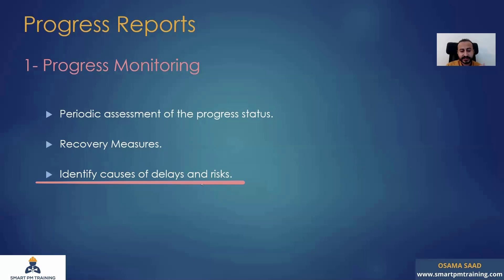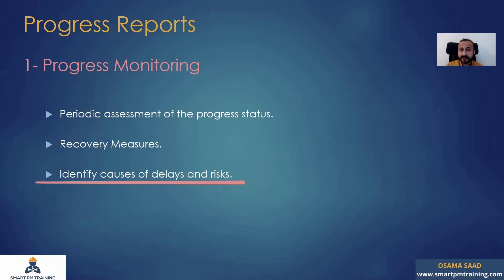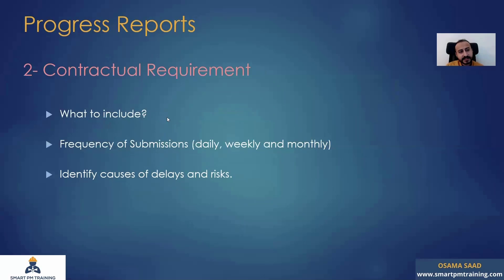Identify causes of delay and risk. You may know that the overall project is in delay by one month, but what is causing the delay? Maybe you are performing very well in concrete, but you have a disaster in block work. Maybe you are not in delay yet in paint work, but there is a risk that this activity will be in delay. For example, you placed the procurement order for paint material very late and it's a long lead item which will take two months to deliver. The paint activities are not in delay yet, but there is a high risk that they will be. You need to identify that and act accordingly.